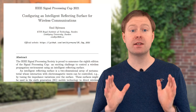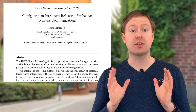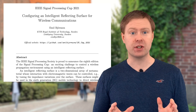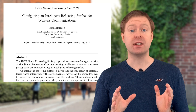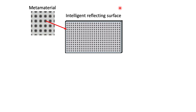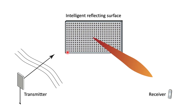This year's topic is configuring intelligent reflecting surfaces for wireless communications, which is one of the emerging topics in 6G communications. An intelligent reflecting surface contains metamaterials that can be configured to reflect wireless signals in different ways, and it can be utilized in wireless communications to improve coverage and ensure that the signal from a transmitter gets reflected towards the location of the receiver.